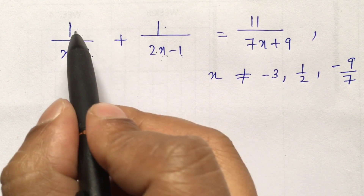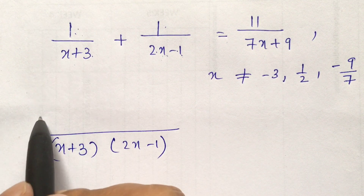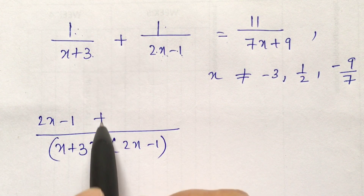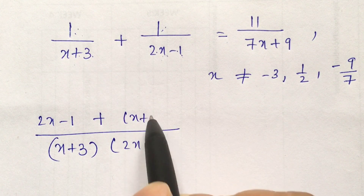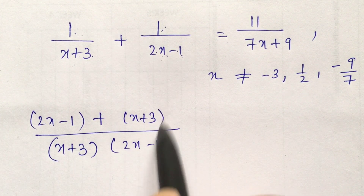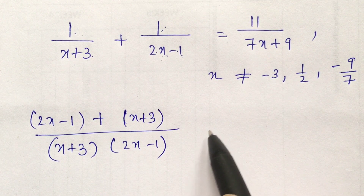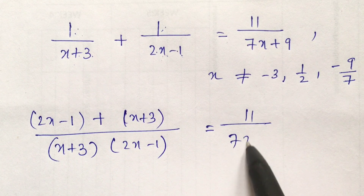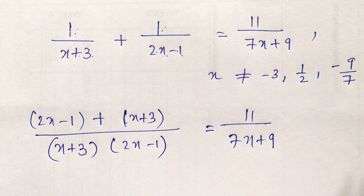Now cross multiply this: 1 into (2x-1) is (2x-1), plus 1 into (x+3) is (x+3). It is good practice to put these inside brackets. This will be equals to 11/(7x+9) as it is.